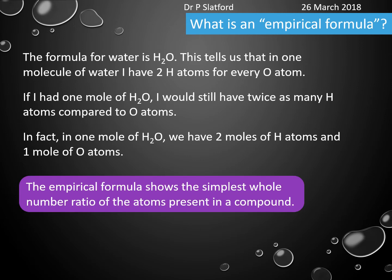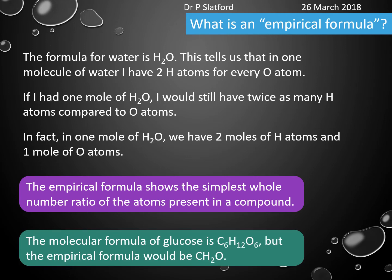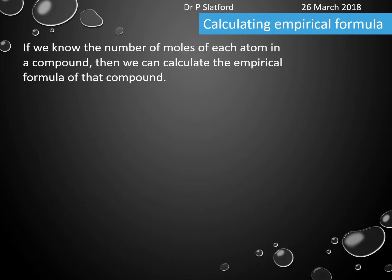The empirical formula is just the simplest representation in a whole number ratio of the atoms present in a compound. For example, the molecular formula of glucose is C6H12O6, but the empirical formula is CH2O.